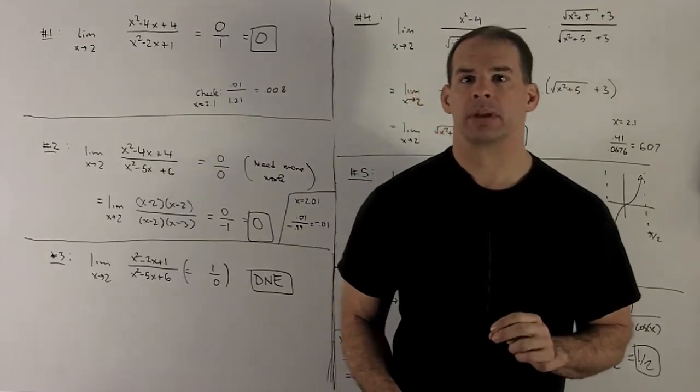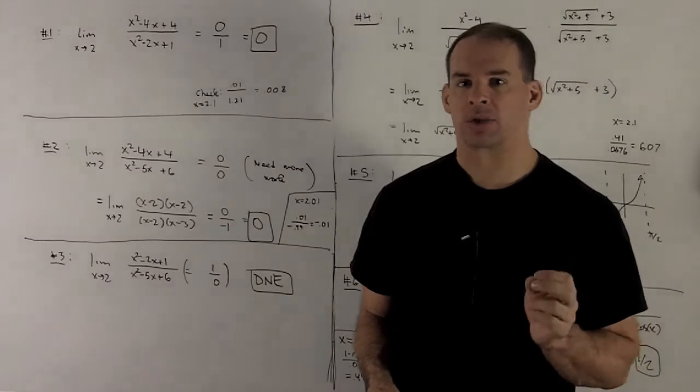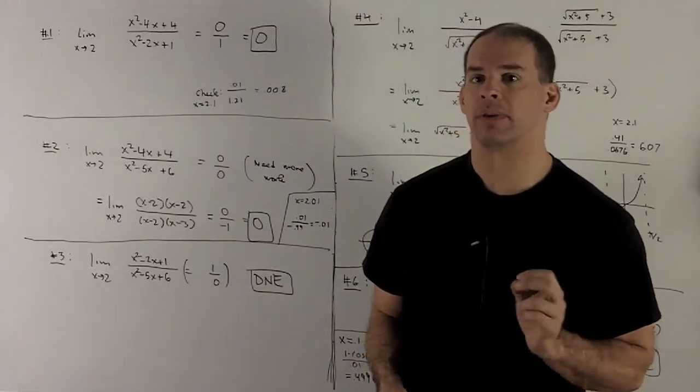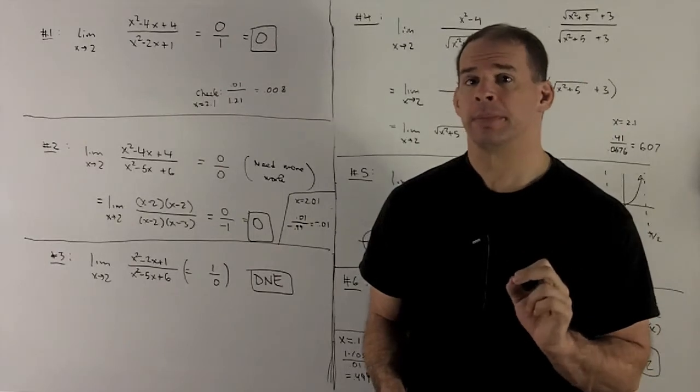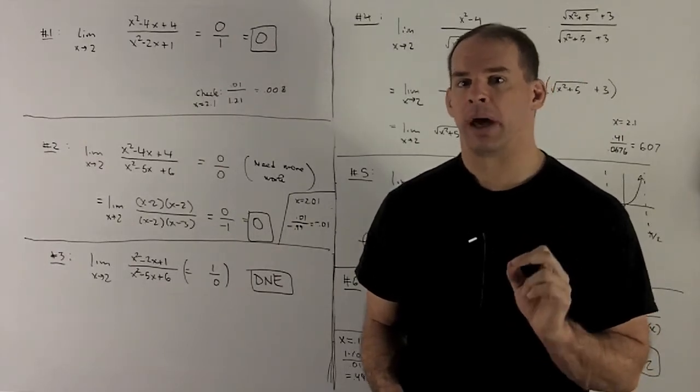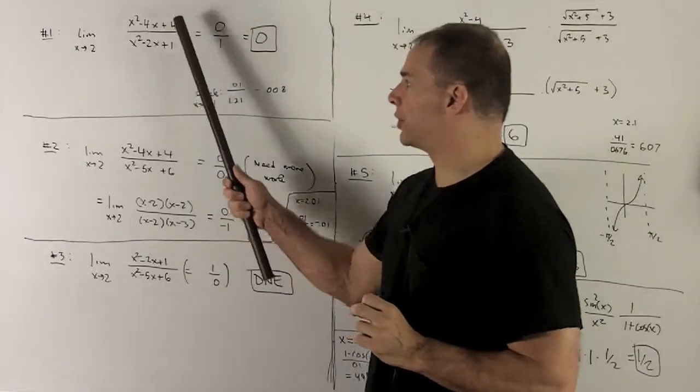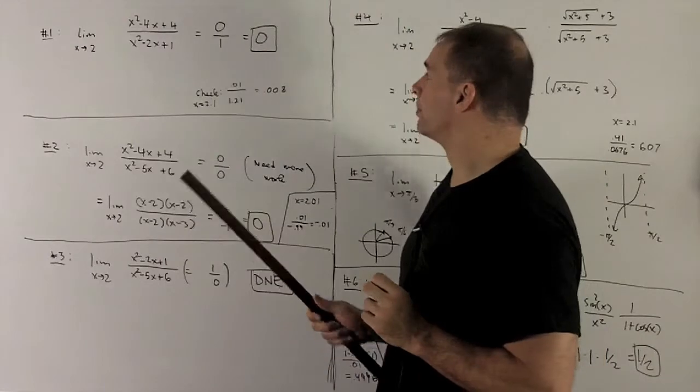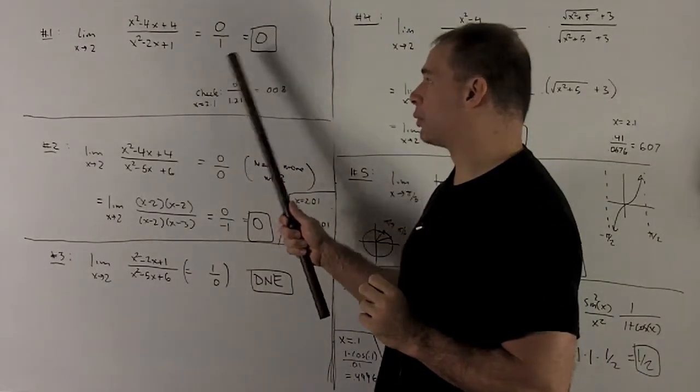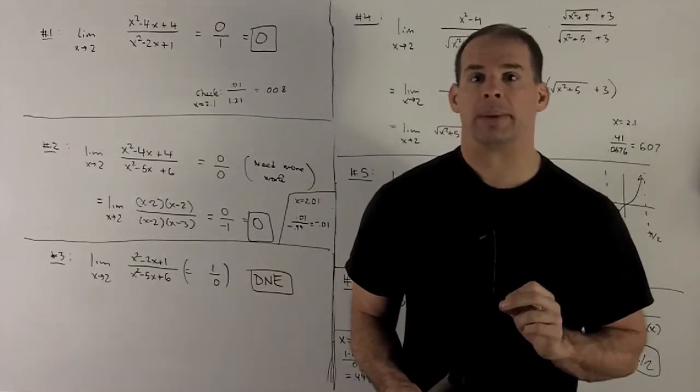Let's calculate some limits. My first one, limit as x goes to 2, x squared minus 4x plus 4 over x squared minus 2x plus 1. So it's tempting to start by factoring, but let's just stick our point in and see what happens. So if I put 2 into the top and the bottom, that's our rule for rational functions, I get 0 over 1, that reduces to 0, and so we're out of there. 0 is a perfectly good number, so that's going to be our limit.